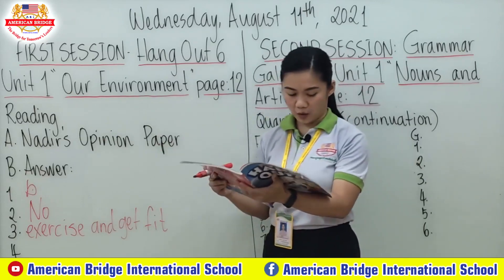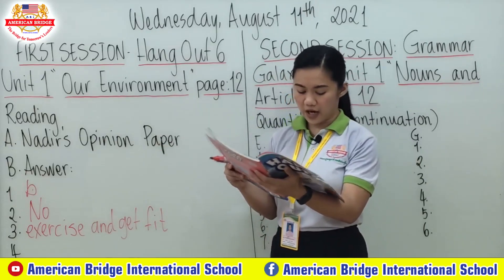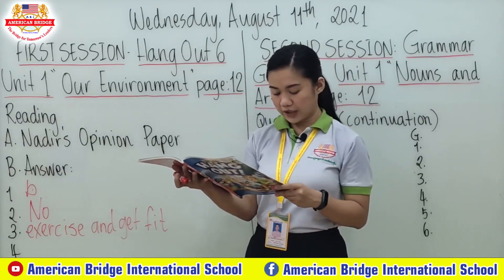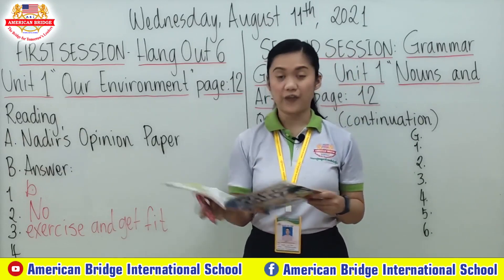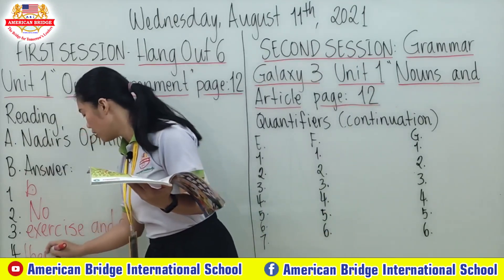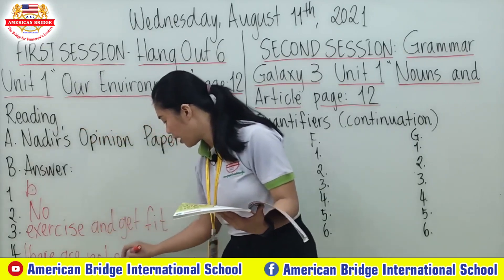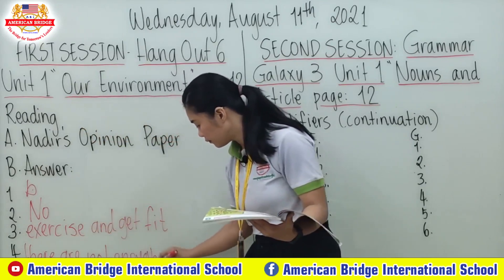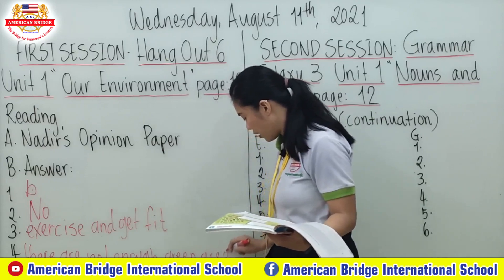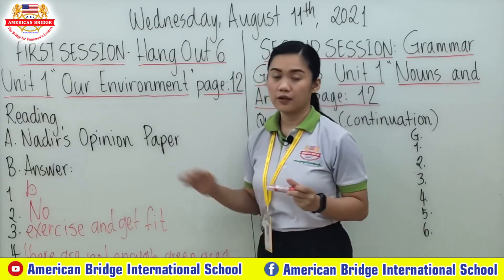Next, number four, our last question: What does Nadir think about the number of green areas in his city? The answer is: There are not enough green areas in his city. These are the answers for our Part B reading.